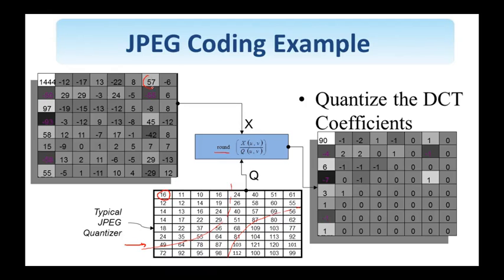For example, if we look at this coefficient, the step size of the uniform quantizer corresponding to that frequency location is 51. So, 57 divided by 51, taking the round operation, will result in 1. Similarly, if we quantize this coefficient, minus 29 is divided by 103, and the quantized value is 0. We see that this table has spectral shape. A lot of work is done into designing such tables, quantization tables, by also taking into account properties of the human visual system. Looking at the quantized values, what we see is that there are now a good number of zeros.